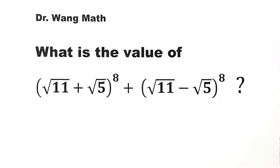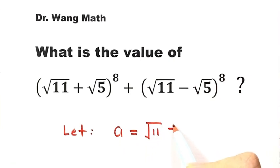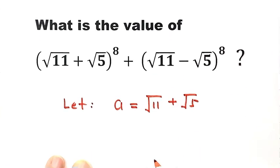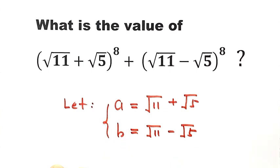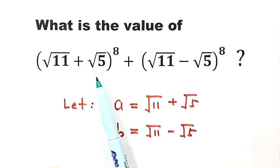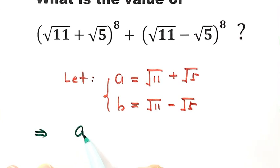So how do we solve it? For simplicity, we're going to let A equal this part — so A equals √11 + √5. Then let B equal this part — so B equals √11 − √5. This problem then becomes: what is A to the eighth power plus B to the eighth power?